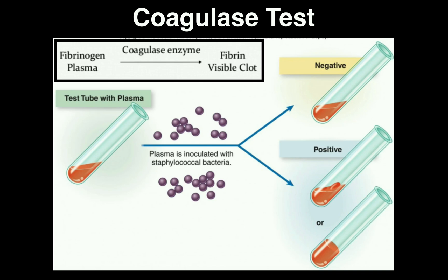This is a test we do in microbiology that's generally done to distinguish two types of Staphylococcus organisms — Staphylococcus aureus and Staphylococcus epidermidis. These are two species under the genus Staphylococcus, but one of them is the virulent species. It is much more dangerous when you come in contact with it, especially if it infiltrates your body, and that is Staphylococcus aureus. The mechanism for that is that they produce an enzyme called coagulase.